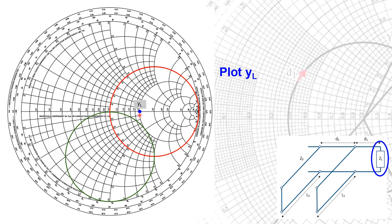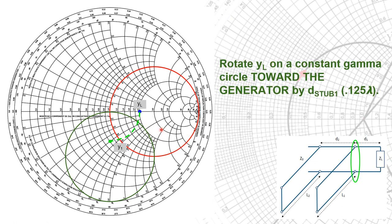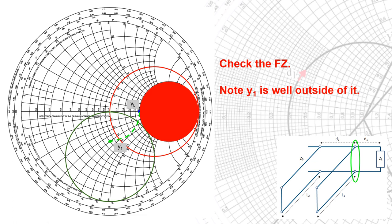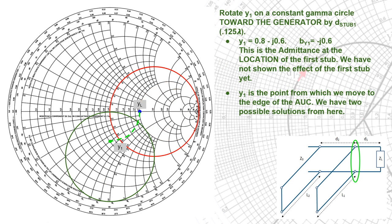Plot our admittance — we're going to put that point right there where it belongs. We're going to rotate on a constant gamma circle toward the generator by the distance d1, which is 1 eighth of a wavelength. Do a quick forbidden zone check — notice Y1 is well outside of the forbidden zone. Since our d1 is non-zero, we move our load impedance on the Smith chart, doing that constant gamma circle rotation by the length d1, which is 1 eighth lambda, moving over to point Y1: 0.8 minus J.6. The susceptances are what we're going to be paying attention to. This is the admittance at the location of the first stub, and we have not shown the effect of the stub just yet.